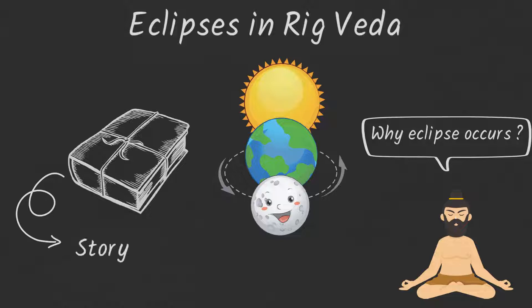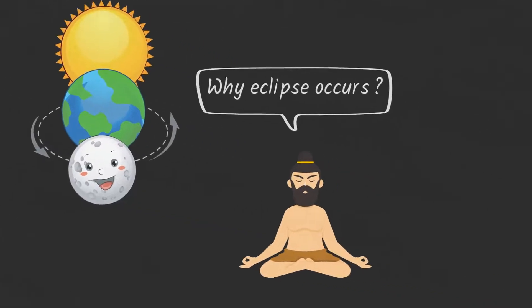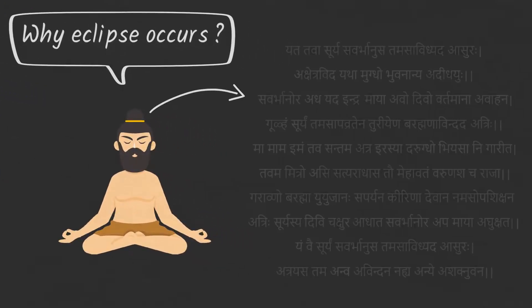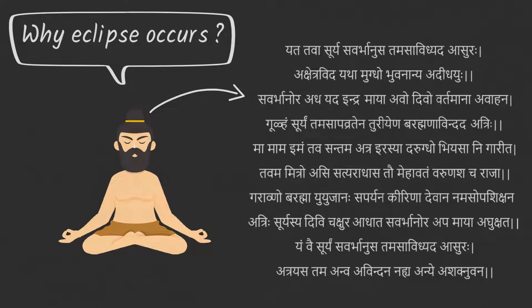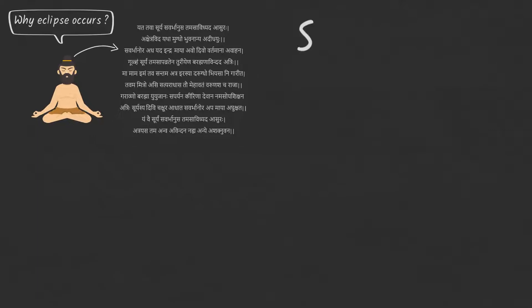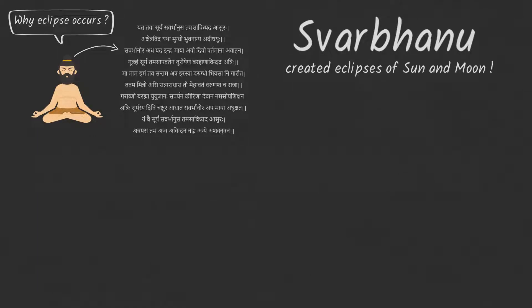Puranas have described the story of Rahu and Ketu in a mystical way, but the essence remains the same as in the Rig Veda. The sage here described how Swarvanu created eclipses of sun and moon, and how the sun appeared after eclipse in the sky.